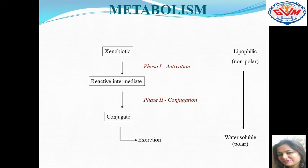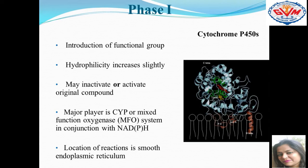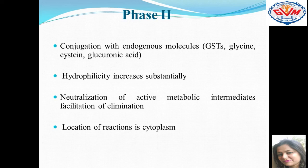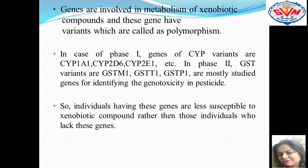The first phase — activation — involves the CYP, known as the cytochrome P450 family. The second phase — conjugation — involves the GST, called the glutathione S-transferase family. The genes studied for xenobiotic metabolizing processes include CYP1A1 and CYP2E1 from the CYP family, and from the GST family: GSTM1, GSTT1, and GSTP1 genes — which are the most studied genes for identifying genotoxicity in pesticides or any xenobiotic compounds.